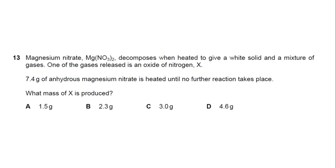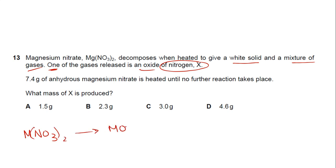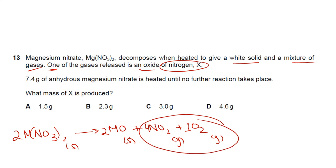Question 13: Magnesium nitrate decomposes when heated to give a white solid and a mixture of gases, one of which is an oxide of nitrogen. You must know the decomposition of carbonates and nitrates for Group 2 elements. A Group 2 nitrate decomposes to give MO + NO2 + O2, with ratios 1:2:4:1 — the solid, then two gases.